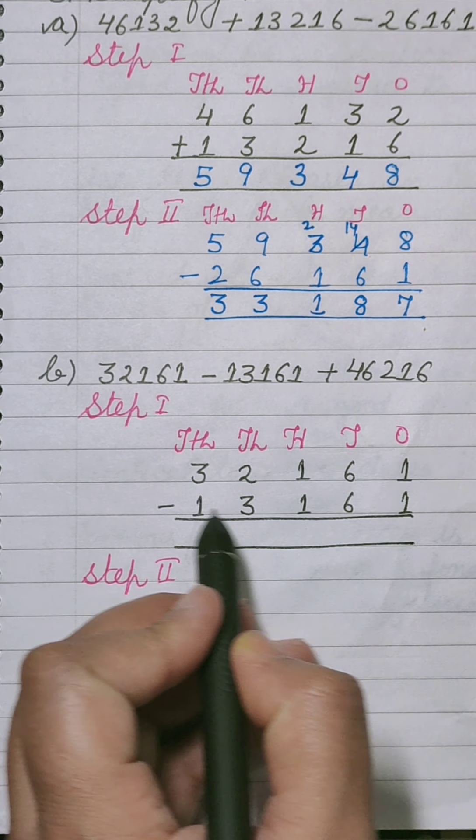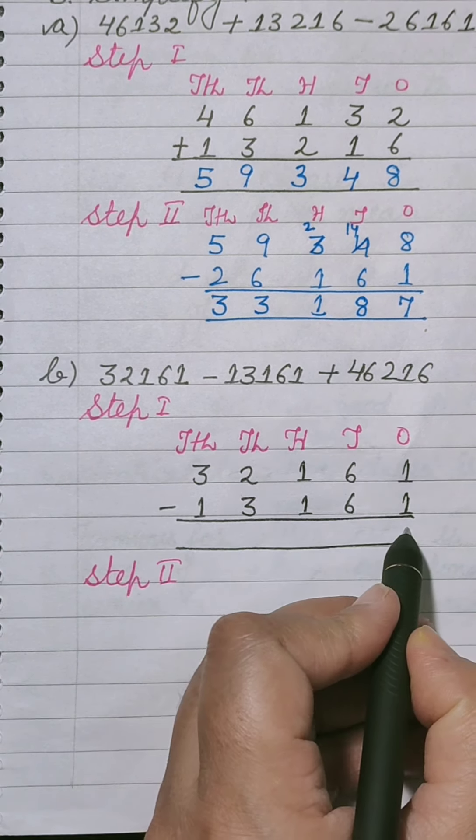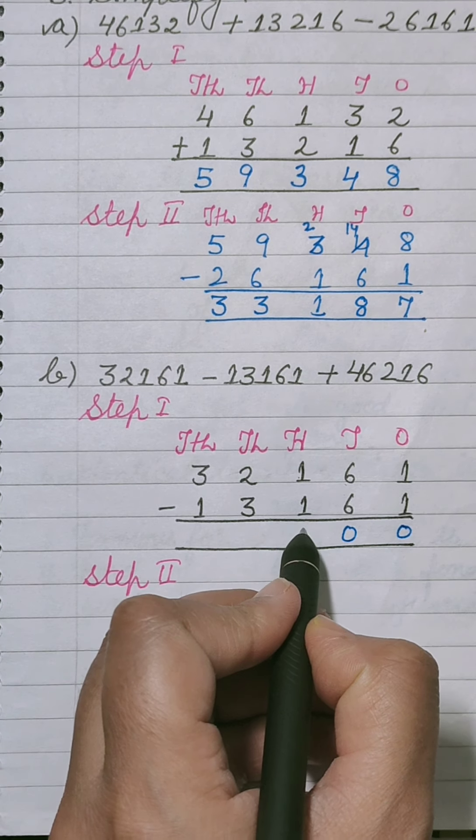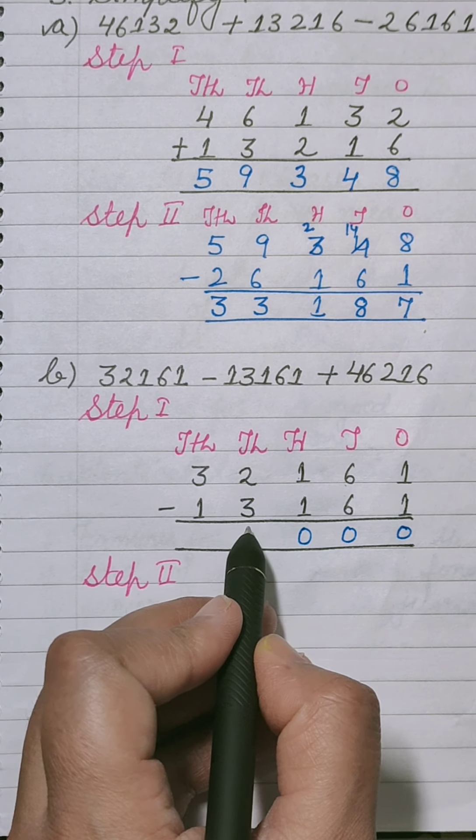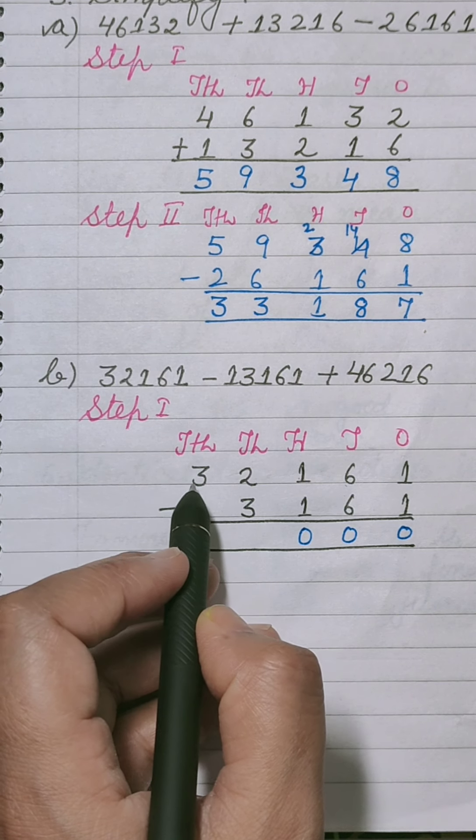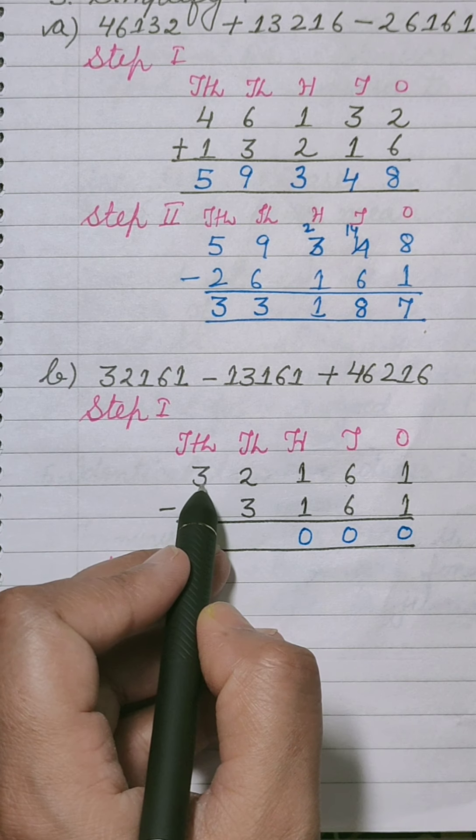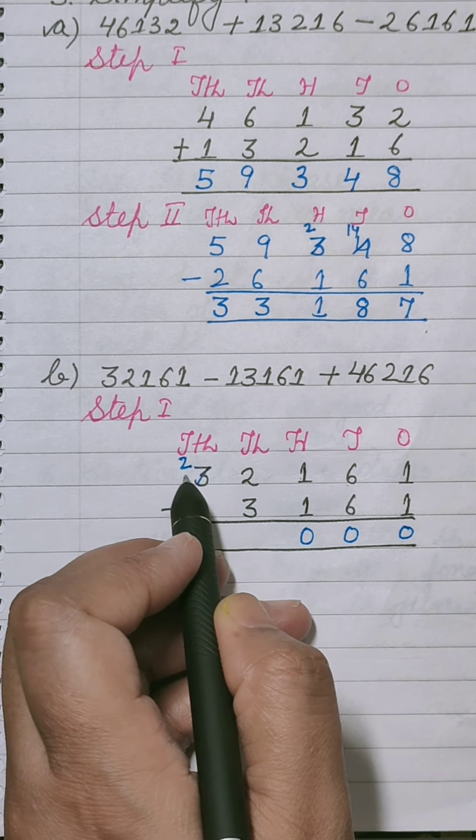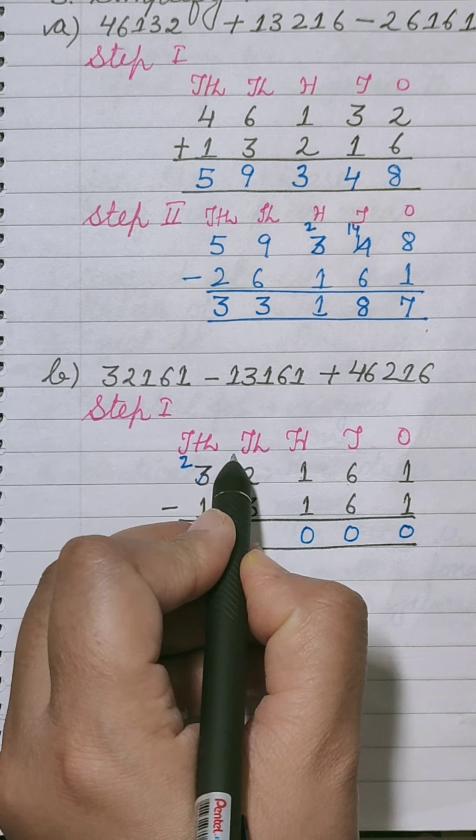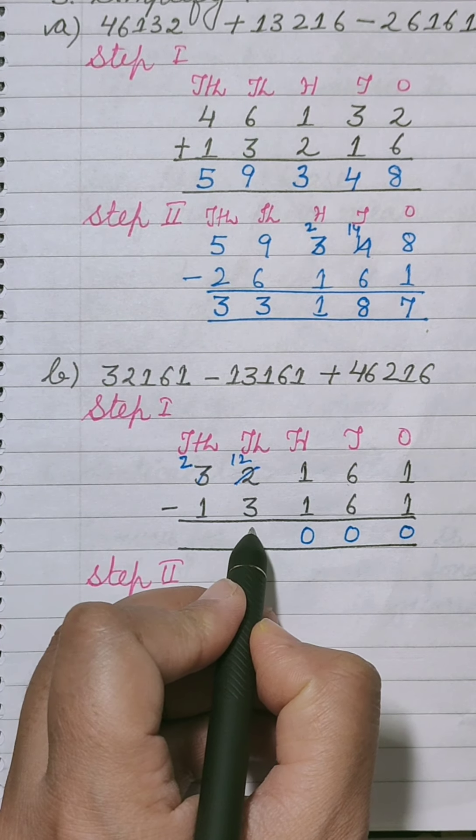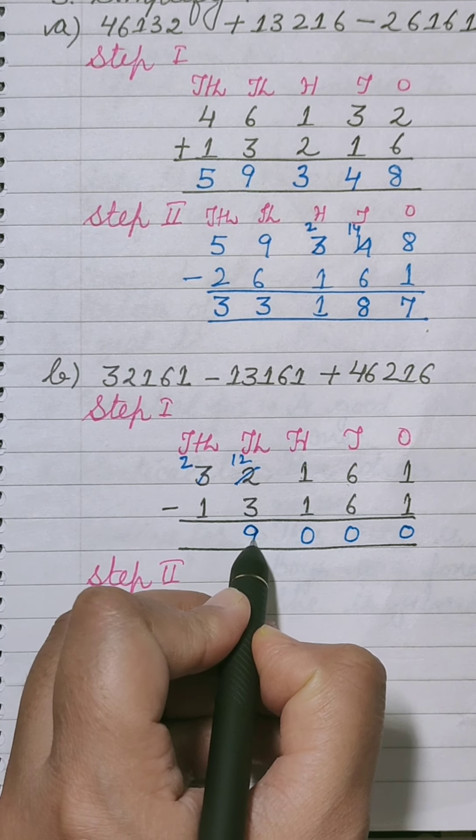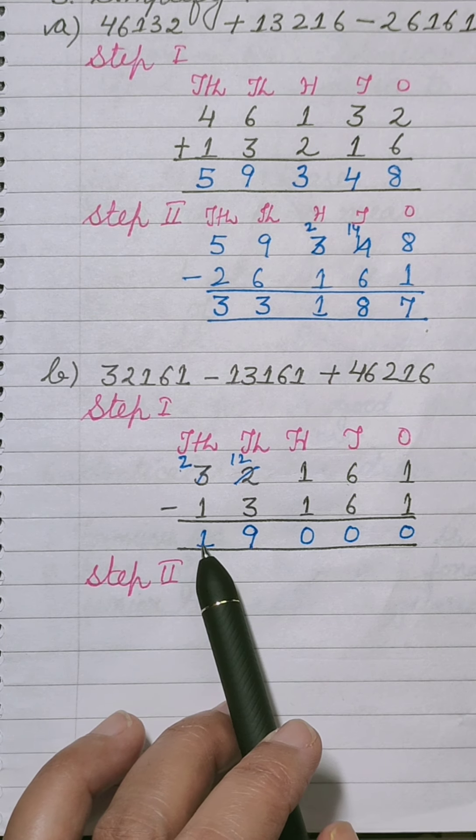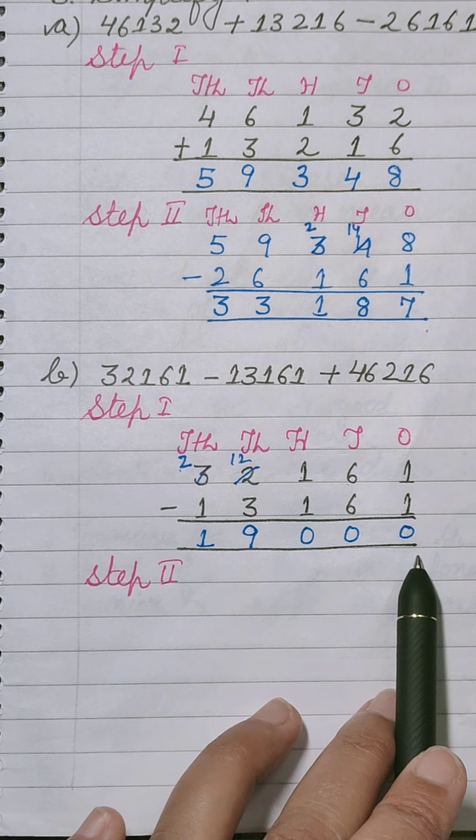Now let us solve. 1 minus 1. It is a sum of subtraction. 1 minus 1 is 0, 6 minus 6 is 0, 1 minus 1 is 0. 2 minus 3 is not possible, so we will borrow 10,000 from 30,000. यहाँ बचा 2 और यहाँ 10 plus 2 is 12. 12 minus 3 is 9. Now 2 minus 1 is equal to 1. Step 1 का अंसर है 19,000.